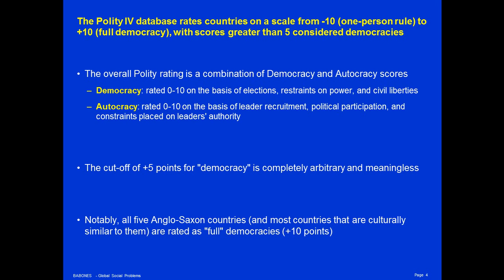Those ratings range from negative 10 to positive 10 — from one-person rule to full democracy — and are based on a score derived from expert ratings. The Polity4 project rates both democracy and autocracy on two separate scales, 0 to 10. Democracy is scored 0 to 10 on the basis of having regular elections, constitutional restraints on power, and guarantees of civil liberty. Autocracy is rated 0 to 10 on the basis of how leaders are recruited, political participation in that process, and constraints placed on leaders' authority. The final Polity score is simply the democracy score minus the autocracy score.